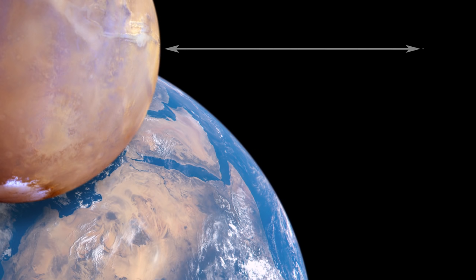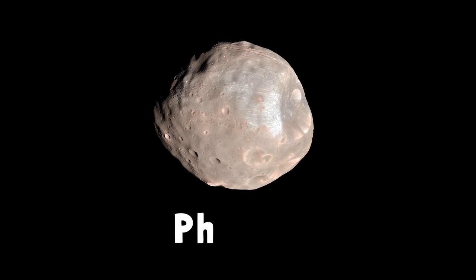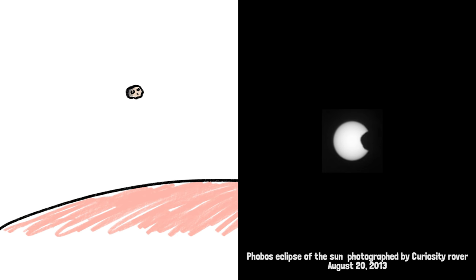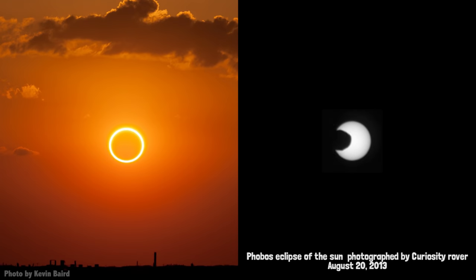Mars' moons are very close and very small, which gives rise to another moon-sized coincidence. Phobos is almost the same size in the Martian sky as the Sun, and can cause annular eclipses, just like our Moon here on Earth.